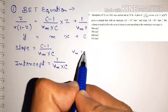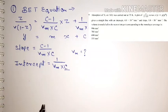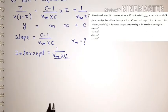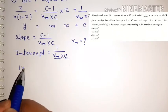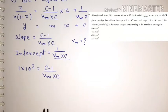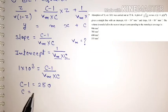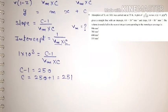The slope and intercept values are given in the question. To find Vm, we first need to find c. Substituting the slope value: 1×10³ = (c−1)/(Vm·c). From this, solving gives c−1 = 250, so c = 251.